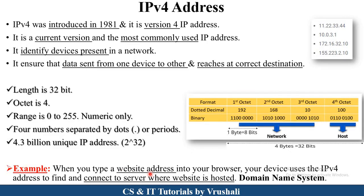The best example of an IPv4 address is the Domain Name System. When you search for a particular website or link in a browser, your device uses the IPv4 address of that website which is hosted on a particular server. That server's IPv4 address is fetched when you use a particular website. So the Domain Name System is the best example of an IPv4 address. Here are some further examples of IPv4 addresses.